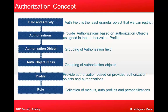In this chart you can see the layers — which layer is at the top and which is at the bottom. Fields and an activity together make up an authorization. Multiple authorizations exist within an authorization object. A grouping of authorization objects is an authorization object class. Providing authorization based on authorization objects and authorizations is done in the profile. A collection of menus, authorization profiles, and personalizations are in the role. The least granular object is the auth field at the bottom, and the role at the top consists of auth profiles and personalizations.